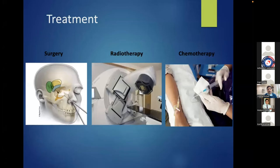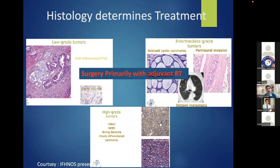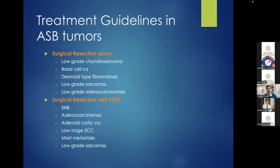In summary, treatment comprises surgery, radiation, or chemotherapy. By and large, all these tumors are primarily surgical except for select histologies where chemoradiation or induction chemotherapy precedes definitive therapy. Histology determines treatment: low-grade tumors like well-differentiated adenocarcinomas and intestinal-type are managed by surgery alone. Intermediate-grade tumors may require surgery plus adjuvant radiotherapy, and high-grade tumors require systemic therapy. This is one category where histology defines the treatment guideline.